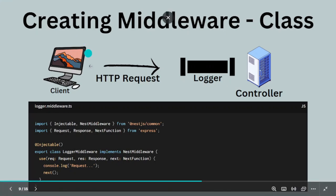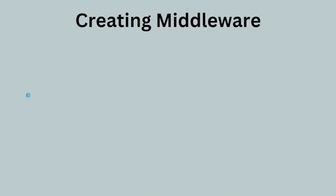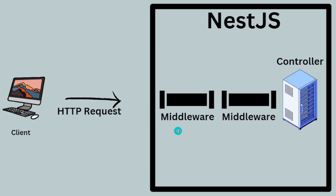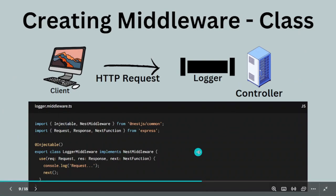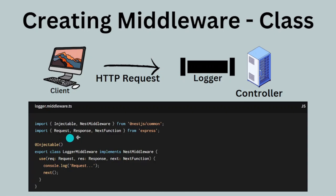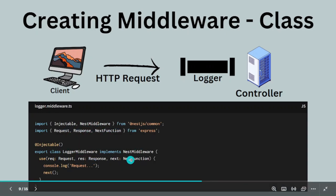For example, when this middleware calls next, it does not know whether the request will go to another middleware or to the controller. Next only means the work of this middleware is done and the request should go ahead to the next destination, whatever that may be. This is boilerplate code — the types request, response, and NextFunction are imported from Express, Injectable is a decorator, and NestMiddleware is the interface the class must implement.